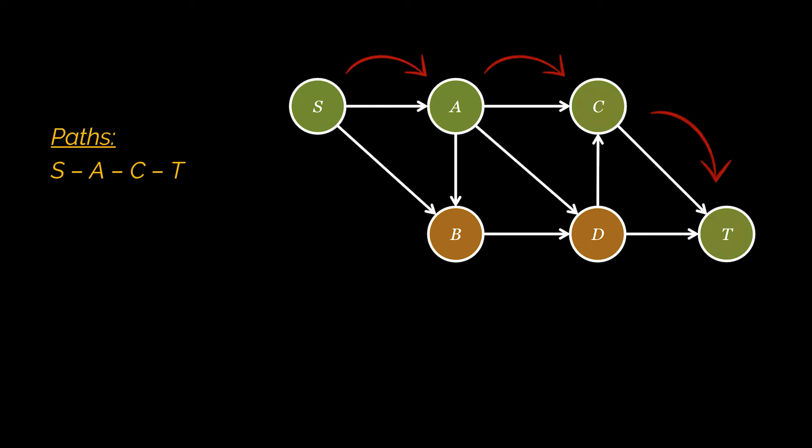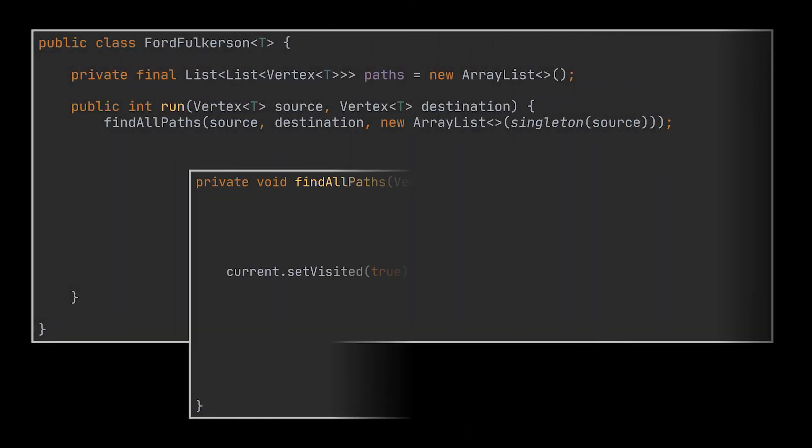We will keep doing this until we reach the destination node, meaning the first path from S to T is complete. Then we will backtrack so we will go back one or two nodes depending on which last node in the path still has neighbors. Then hop again to the next neighbor. We will add this neighbor node to the path until we reach the destination and our path is complete. We will keep backtracking and adding nodes to every new path until all the possible paths are found.